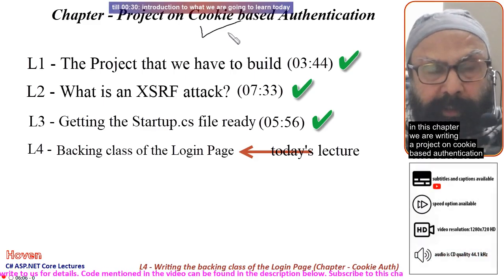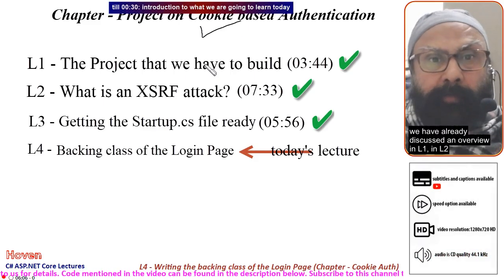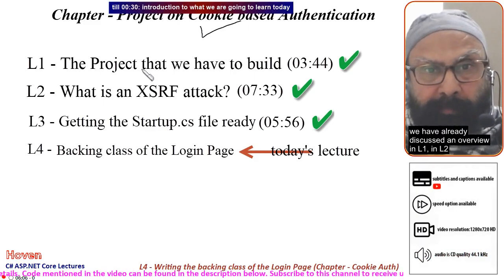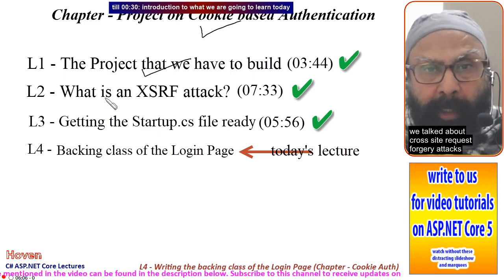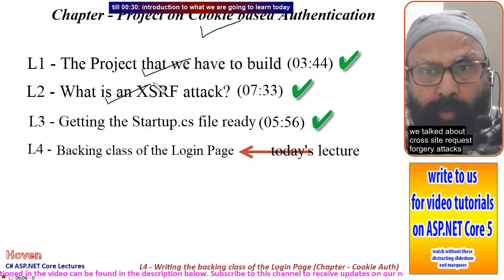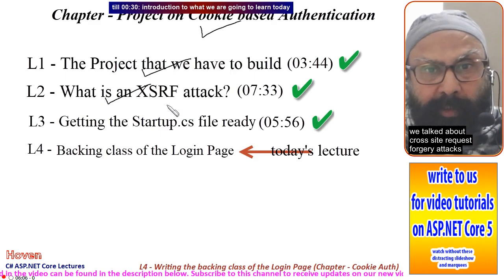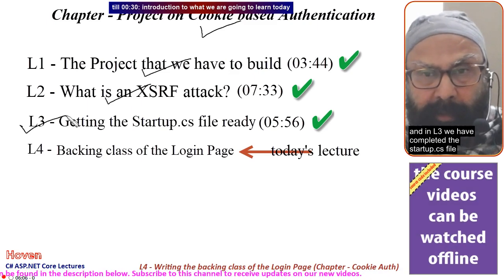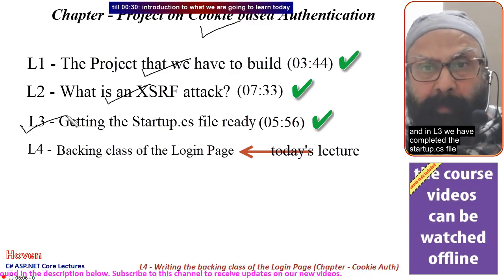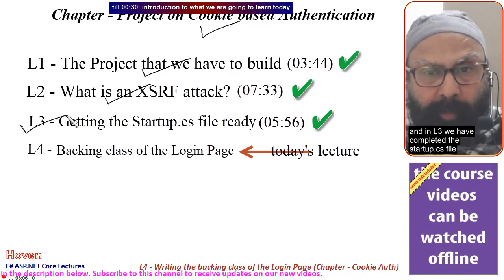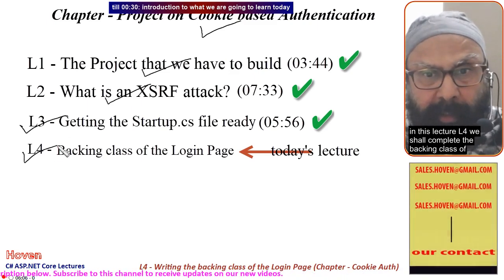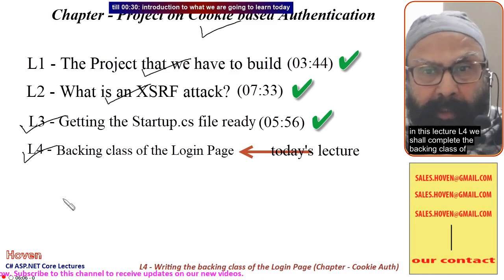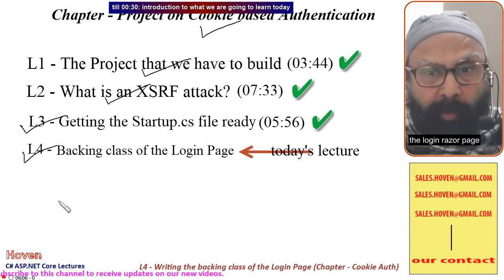This is a project on cookie-based authentication. We have already discussed an overview in L1. In L2 we talked about cross-site request forgery attacks. In L3 we completed the startup.cs file. In this lecture, L4, we shall complete the backing class of the login Razor page.